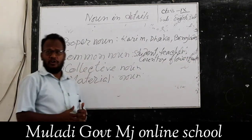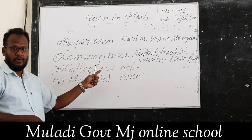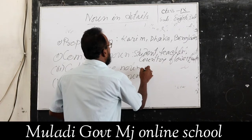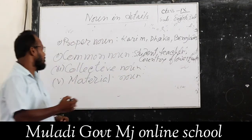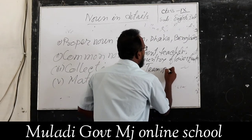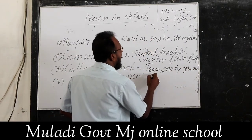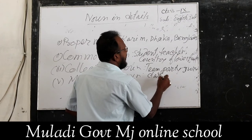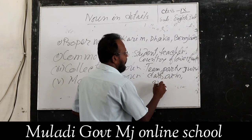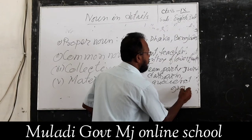What is collective noun? Collective noun is the name of a group or a collection taken together, such as team, party, jury, class, army, audience, group, etc.